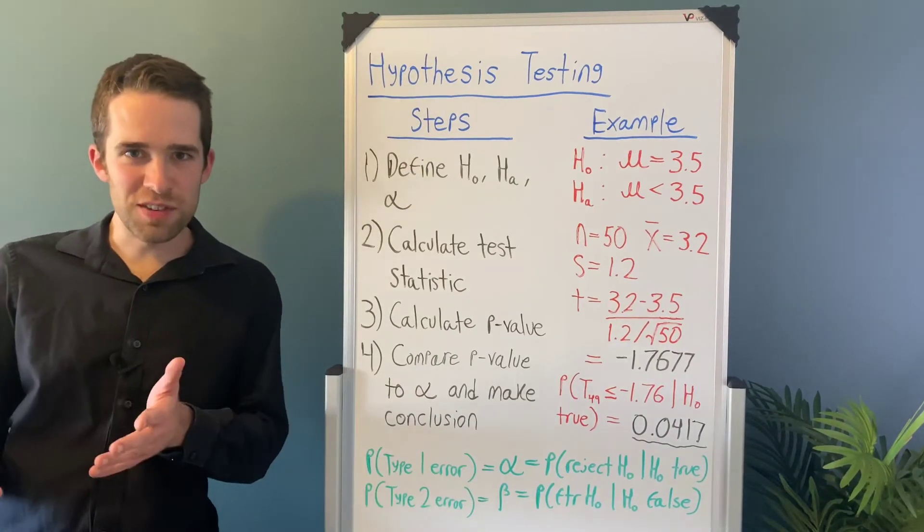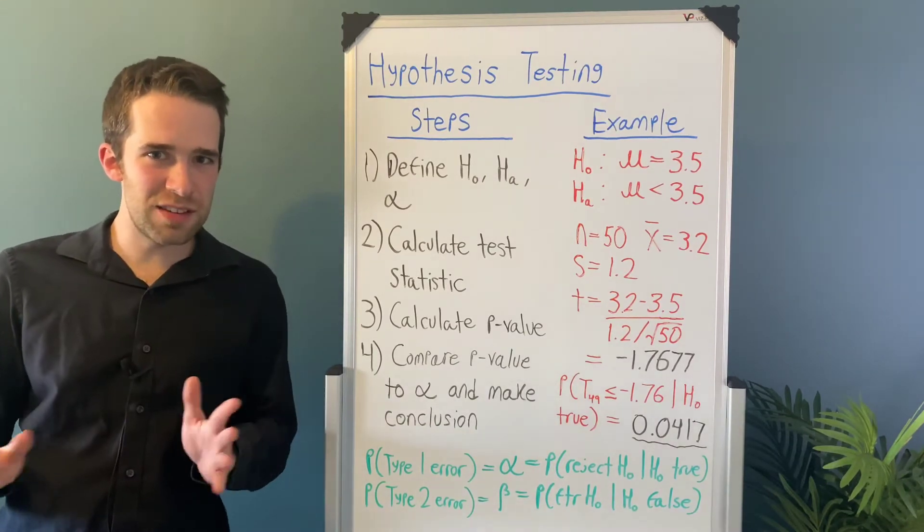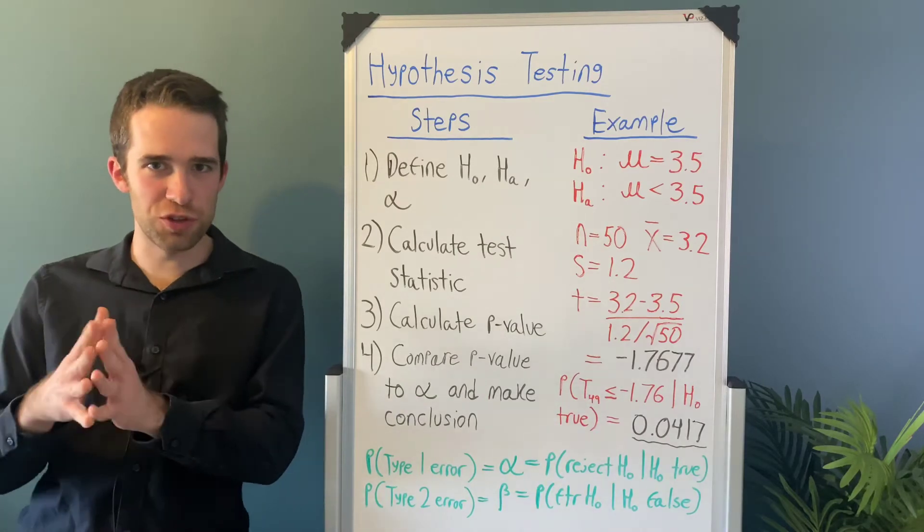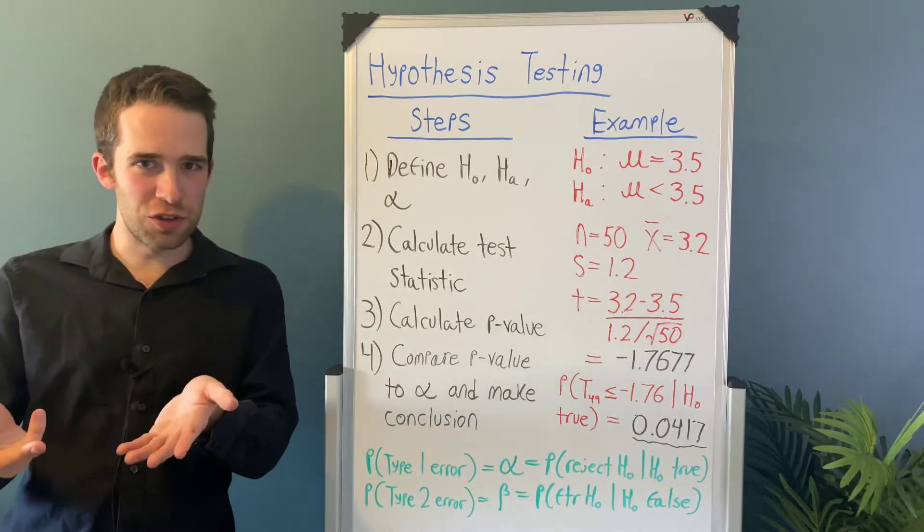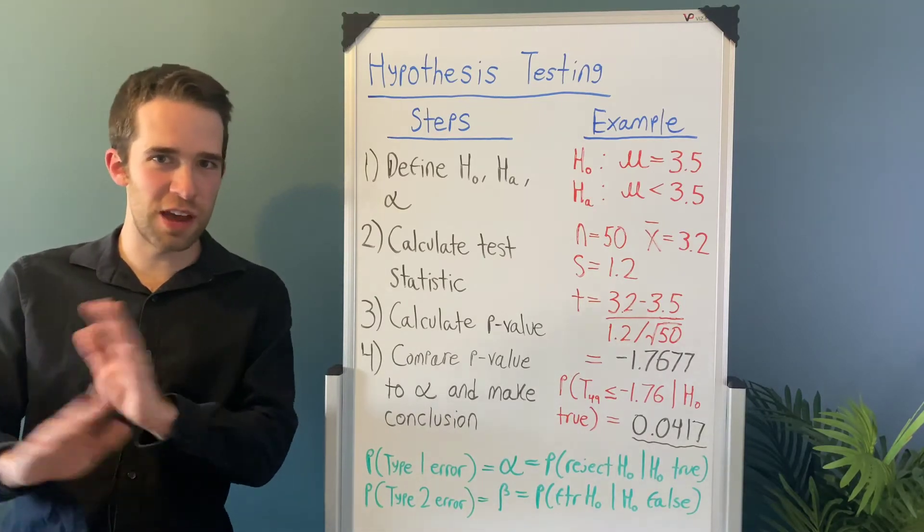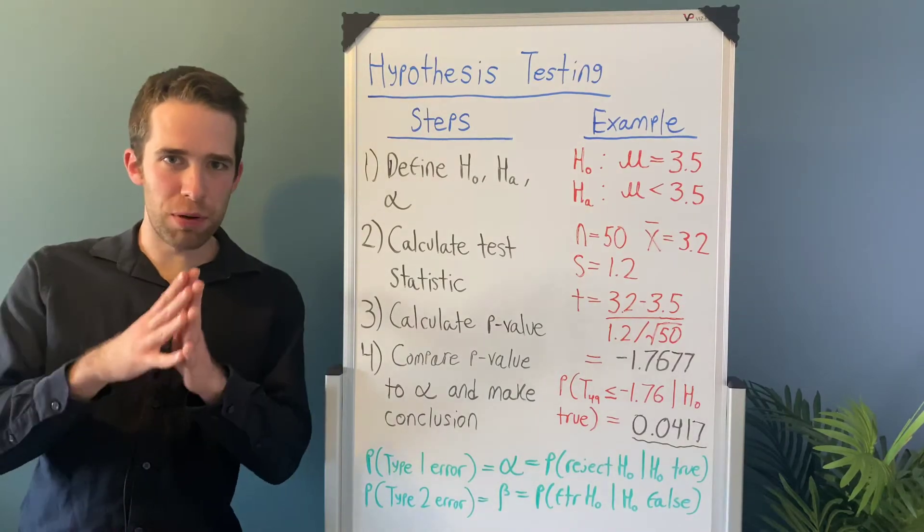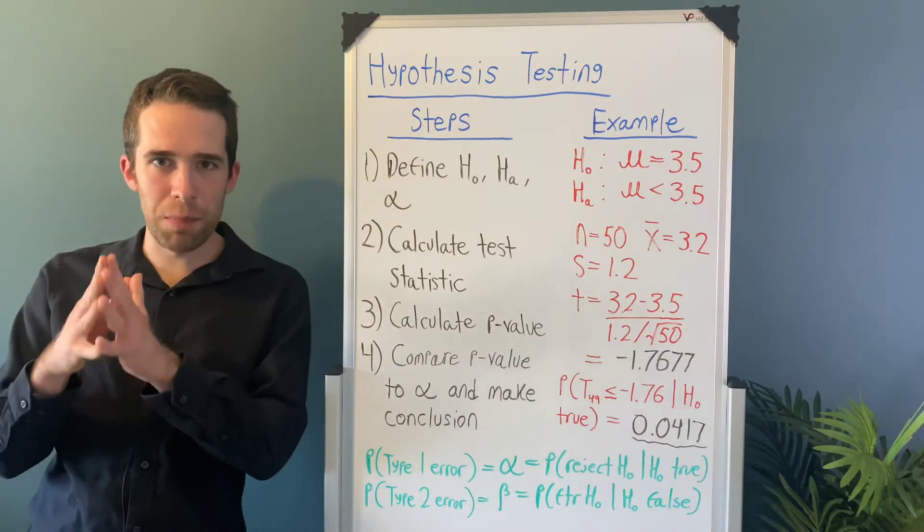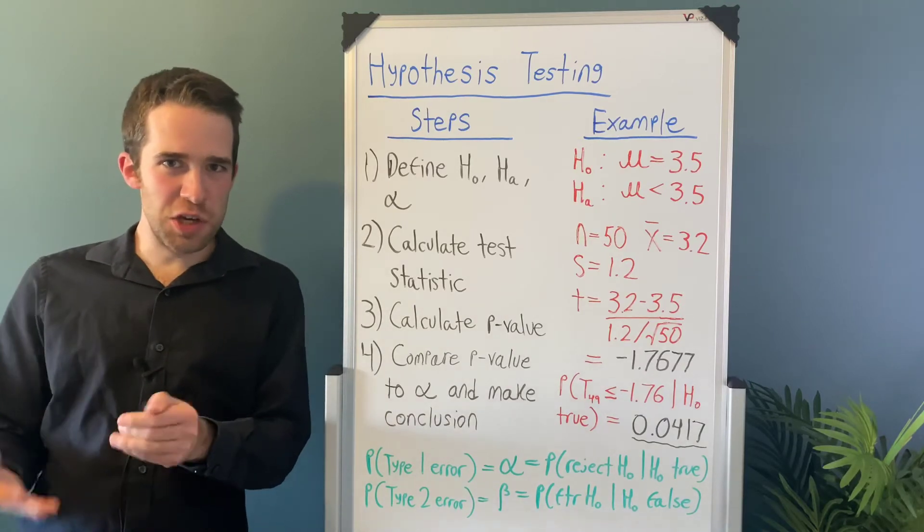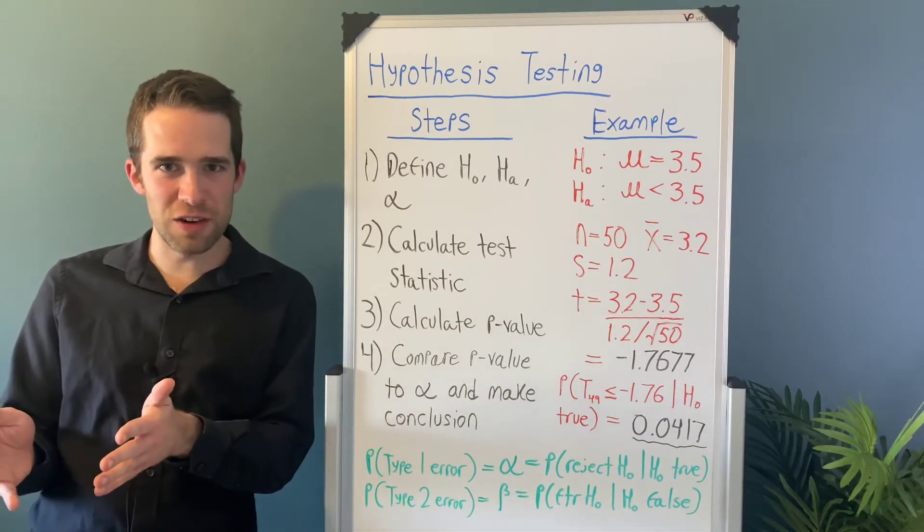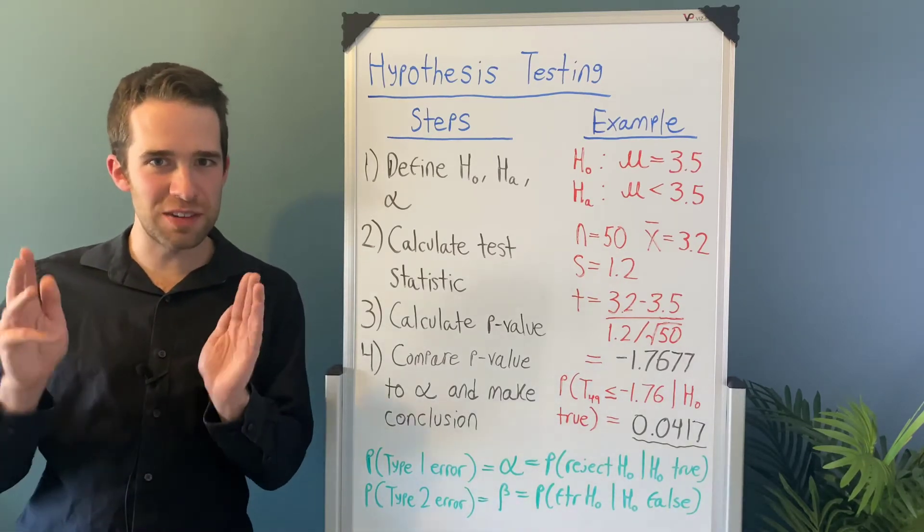On to step two. Now in step two, we have to calculate a test statistic. And all this is, is a quantity that describes how extreme the results of your data are in one way or another. Now we use a statistical distribution here, the same way we do with tons of other probability calculations. Now what we're doing here is a probability calculation about a population mean. And in virtually all these instances, you don't know the population variance or population standard deviation either. So in all of these instances, we use a t distribution.